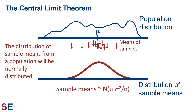Most of the sample means would be close to the mean of the population, but a few would be further away. The Central Limit Theorem tells us exactly how many would be close and how many would be far, and in what proportions. The width of this distribution of sample means is based on the variance in the population and the sample size of each sample.